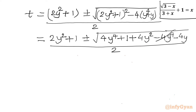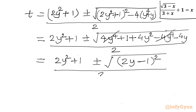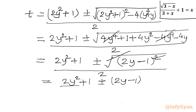The remaining terms under the radical are 4y squared minus 4y plus 1, which is a perfect square of (2y minus 1). We can verify: (2y)² = 4y², 1² = 1, and minus 2 times 2y times 1 gives minus 4y. So after taking the square root, we have: t equals (2y squared plus 1 plus or minus (2y minus 1)) divided by 2.